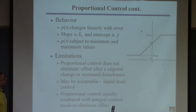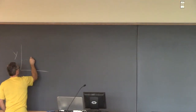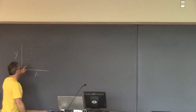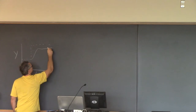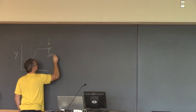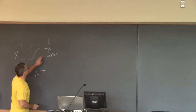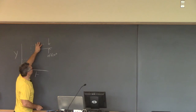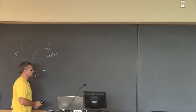One problem with proportional control is it doesn't eliminate offset. If you have a set point change, a proportional-only controller might not actually reach the desired value — the output falls short. This is called offset, and it's quite undesirable for operations people. If the desired temperature is 230 degrees but the actual is 210, they'll assume the controller isn't working and shut it off.